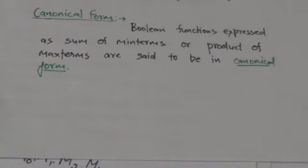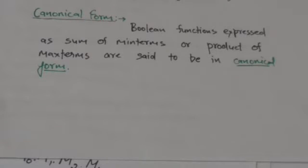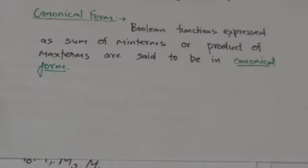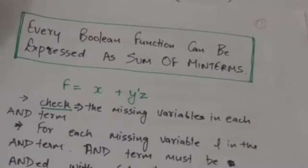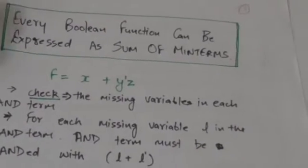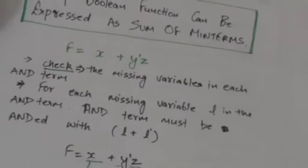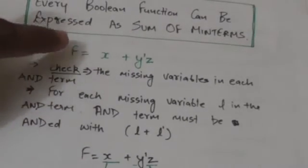Hello friends, welcome back. In this tutorial we will study about canonical form. A boolean function expressed as sum of minterms or product of maxterms is said to be in canonical form. Now, every boolean function can be expressed as a sum of minterms.